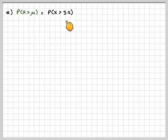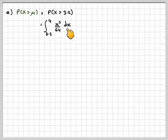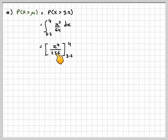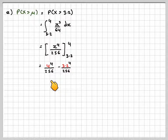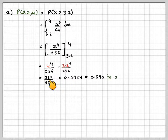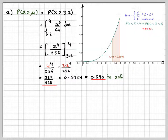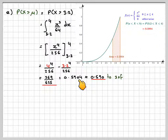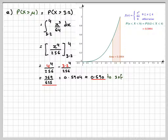The probability that x is greater than the mean (3.2) requires integrating x³/64 from 3.2 to 4. That gives x⁴/256 evaluated from 3.2 to 4: 4⁴/256 minus 3.2⁴/256 = 369/625, or approximately 0.590 to three significant figures. Using the GeoGebra applet confirms this answer, though arrow keys are needed to set precise decimal values.